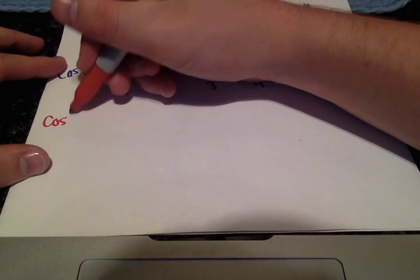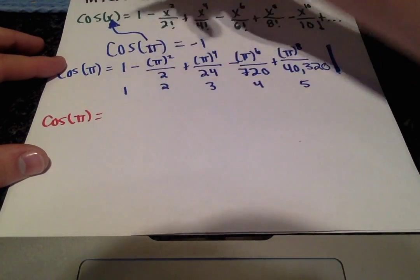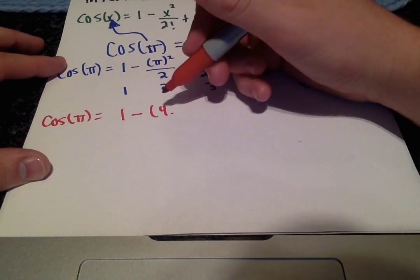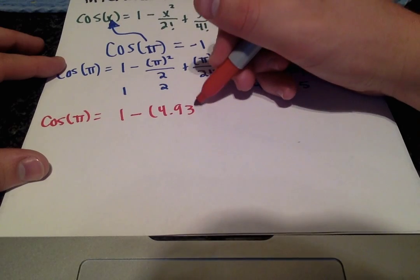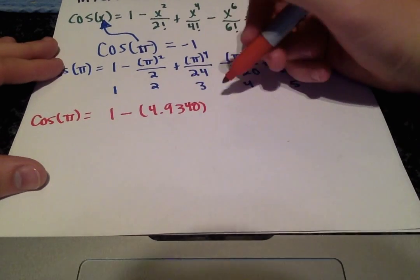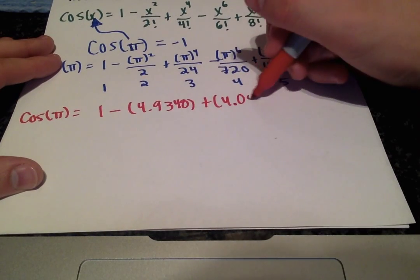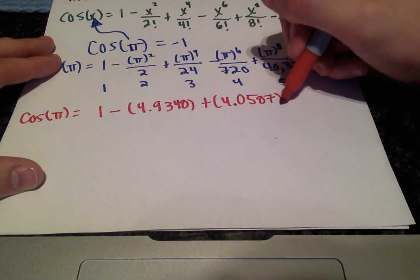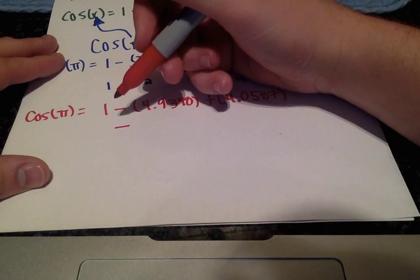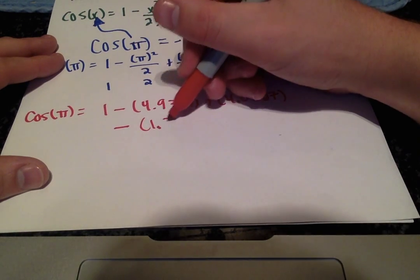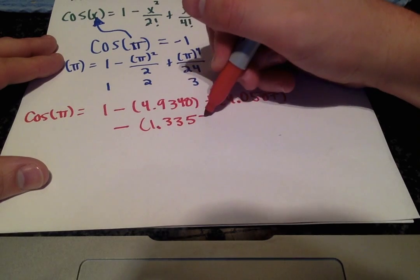So, I'll write all the intermediate calculations here with four decimal places. So, cosine of π is 1 minus 4.9348 plus 4.0587 minus 1.3353 plus 0.2853.